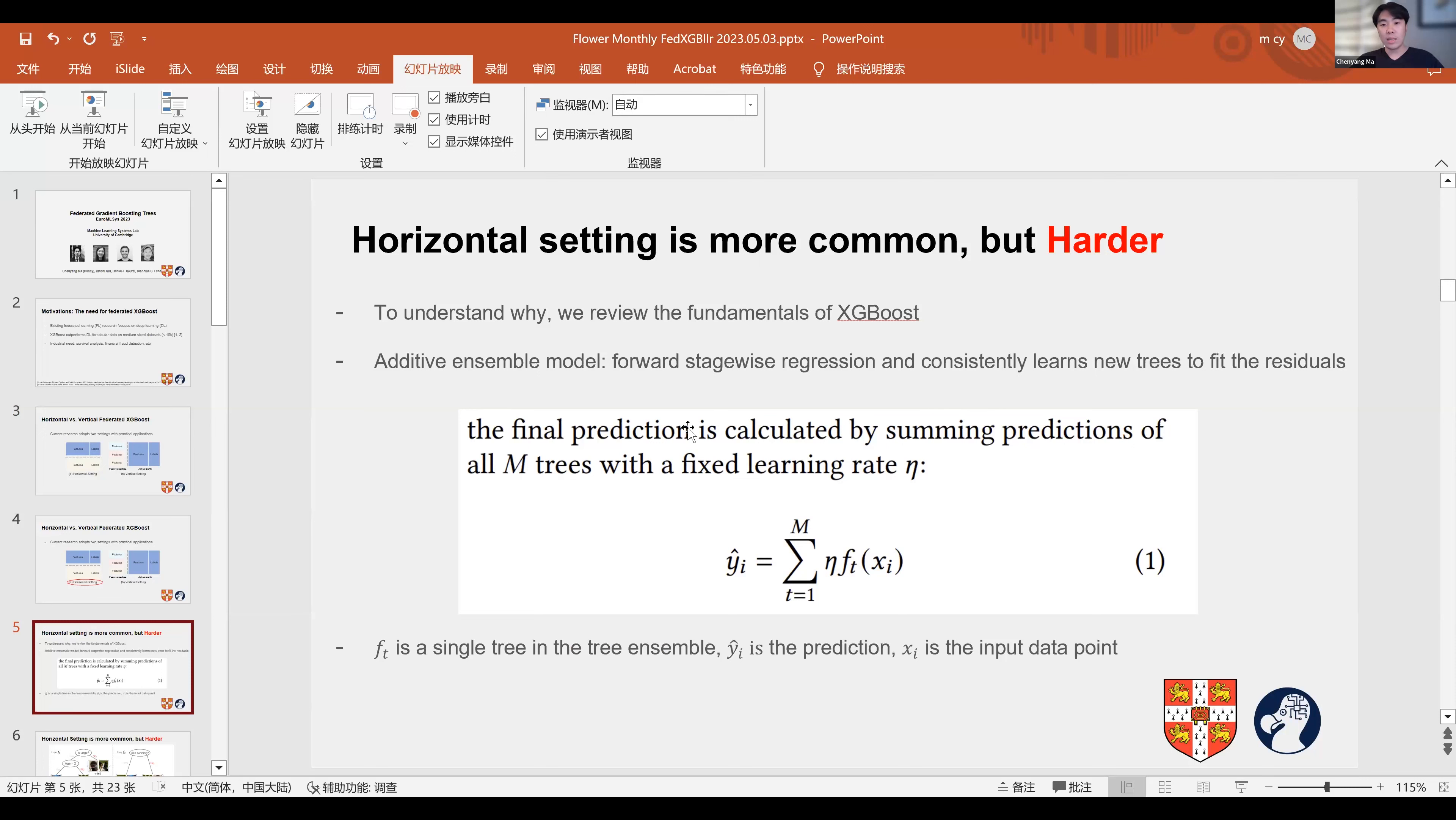To understand why, we need to reveal the fundamentals of XGBoost. XGBoost is an additive ensemble model. It adapts forward stagewise regression and constantly adds new trees to fix the residue of the previous tree until a stop condition is met.